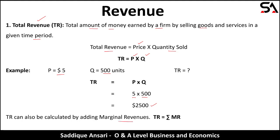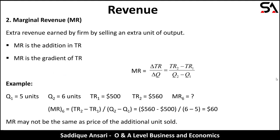Total revenue can also be calculated by adding marginal revenues for all the units — it is the sum of marginal revenues. So we can add marginal revenue of the first unit, marginal revenue of the second unit, and so on up to marginal revenue of the last unit in order to get total revenue.